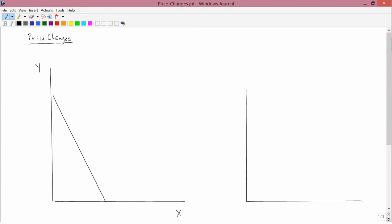We now turn our attention to price changes, which are more complicated than income changes, and will hold our attention for most of the rest of this chapter.